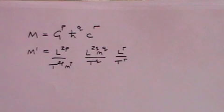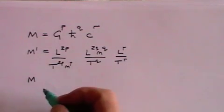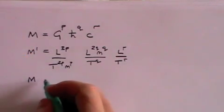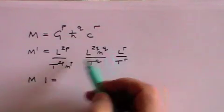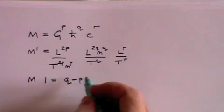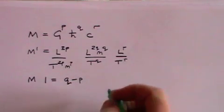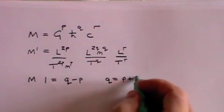Once again we do the dimensional analysis. We'll start with M. With M we've got a power 1 equals, the only two things we've got here are M to the power Q and M to the power P. So that is Q minus P, which tells us that Q equals P plus 1.